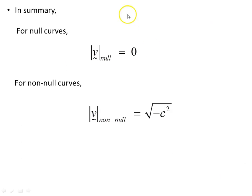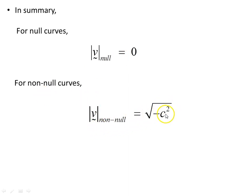In summary: for null curves, the modulus of the tangent vector equals zero. For non-null curves, the modulus of the tangent vector is the square root of gᵘᵛ vᵘ vᵛ — in other words, it is non-zero. That's it.